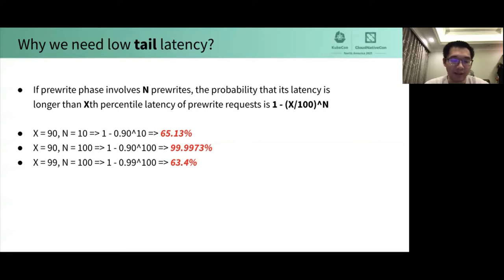For example, x is 90, n is 10, then the probability is 65 percent. It's pretty high, right? In summary, while n is larger, the latency of pre-write phase is closer to the tail latency of pre-write requests.